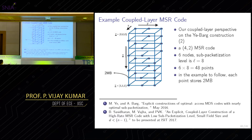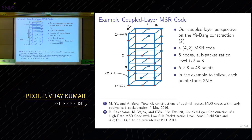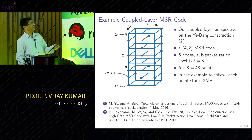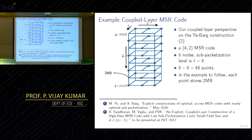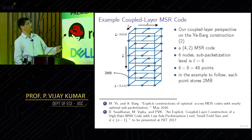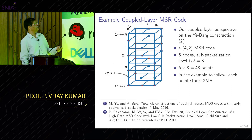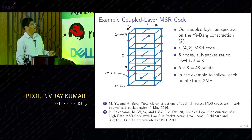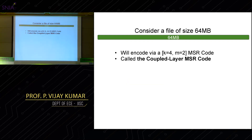Each node stores eight symbols, giving 6×8 = 48 symbols total. In the example, every point in this three-dimensional space corresponds to storage of 2 MB. Consider a file of size 64 MB encoded using this code. The first step is to break it into k data chunks: 64 divided by 4 gives four chunks of 16 MB each.